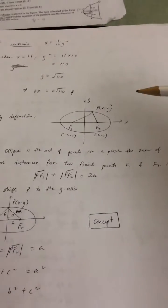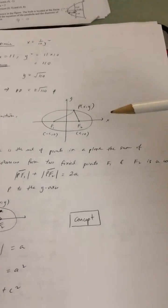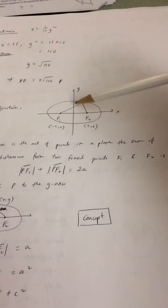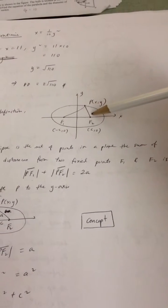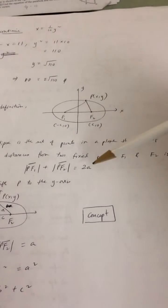By definition, an ellipse is the set of points in a plane where the sum PF₁ + PF₂ equals 2A. This is the definition.